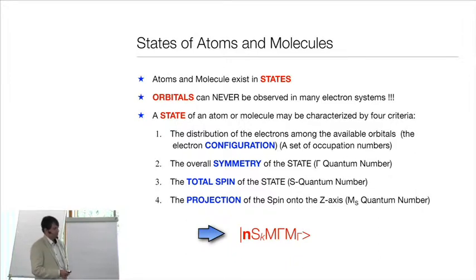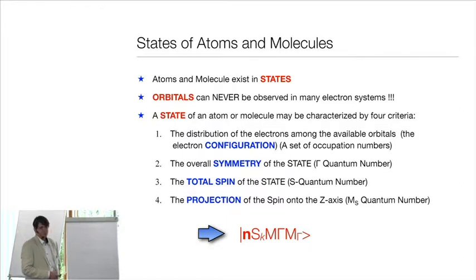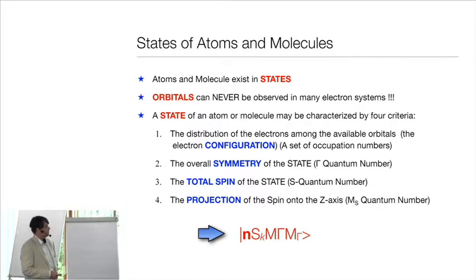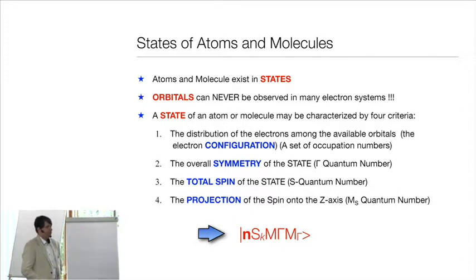The first criterion is the distribution of electrons among available orbitals — that is called the electronic configuration. Then there is the overall symmetry of the state if the molecule transforms according to any point group. Third is the total spin of the state, and fourth is the projection of the spin onto an axis — m_s. This is exactly what I showed you before. So this is what makes up an electronic state.